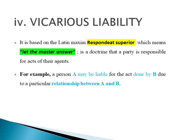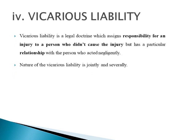Vicarious Liability. It is based on the Latin maxim respondeat superior, which means 'let the master answer' — a doctrine that a party is responsible for the acts of their agents. Under vicarious liability, a person A may be liable for the act done by B due to a particular relationship between A and B. So vicarious liability is an exception to the general rule that a person is liable for his own wrongful acts and not for the acts of others. Vicarious liability may be defined as a legal doctrine which assigns responsibility for an injury to a person who did not cause the injury but has a particular relationship with the person who acted negligently. The nature of vicarious liability is jointly and severally.